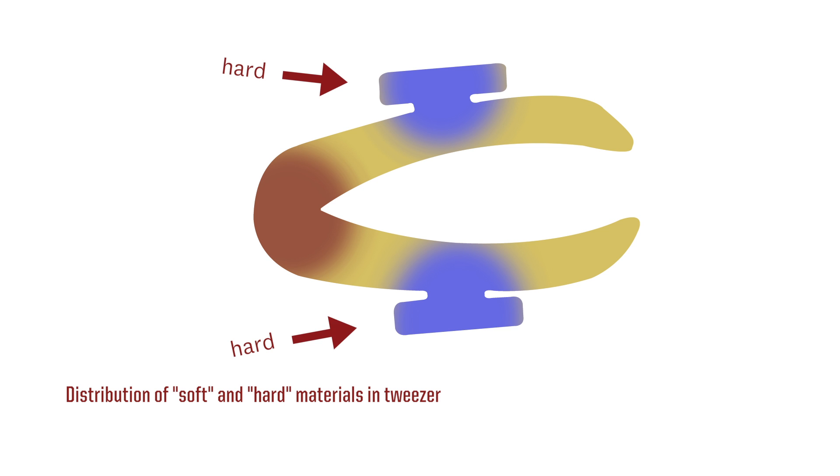And then for the tip of the tweezer, we don't want it to be too hard. Then it may damage the object you want to grab. You need different flexibility, hard layers within one component.